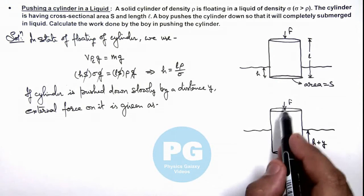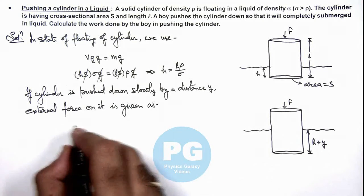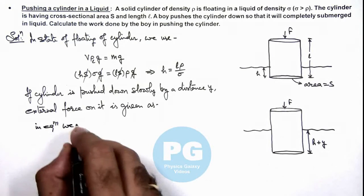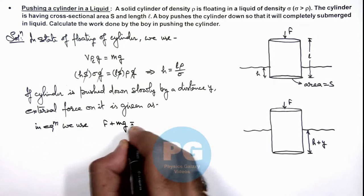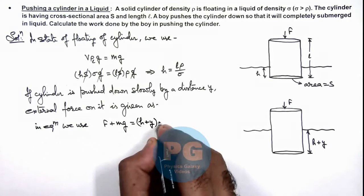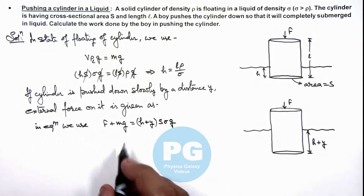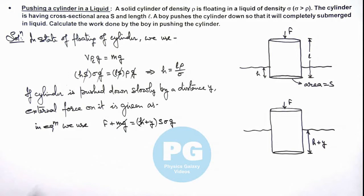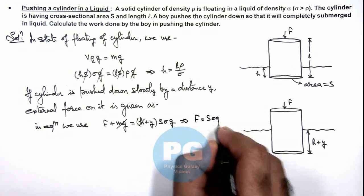Then in this situation this force would be balancing the buoyant force minus the weight of this cylinder. So we can write, in equilibrium we use here F plus mg should be equal to (h plus y) multiplied by S times σ times g. In this situation, this mg and this hSσg get cancelled out, and in this situation the value of force we get is Sσgy.